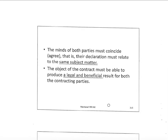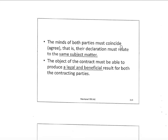The minds of both parties must meet — meaning both must agree — and that declaration must be related to the same subject matter. For example, a buyer tells a book seller: 'I want a dictionary that can translate from English to Arabic.' So the seller understands that the customer actually wants a dictionary from English to Arabic. At that point, both have understood the same subject matter.